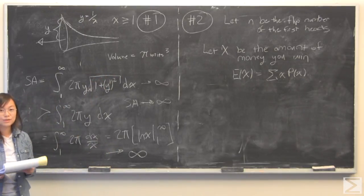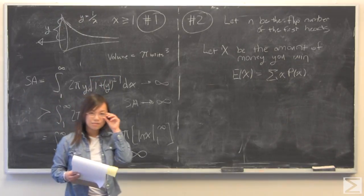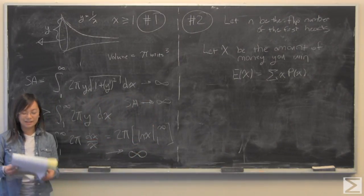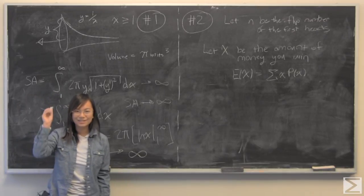But your volume is finite, so you could theoretically fill this shape with pi cubic units of paint, but you could not paint the outside, which is kind of weird and kind of paradoxical. And that is why this is known as a painter's paradox.